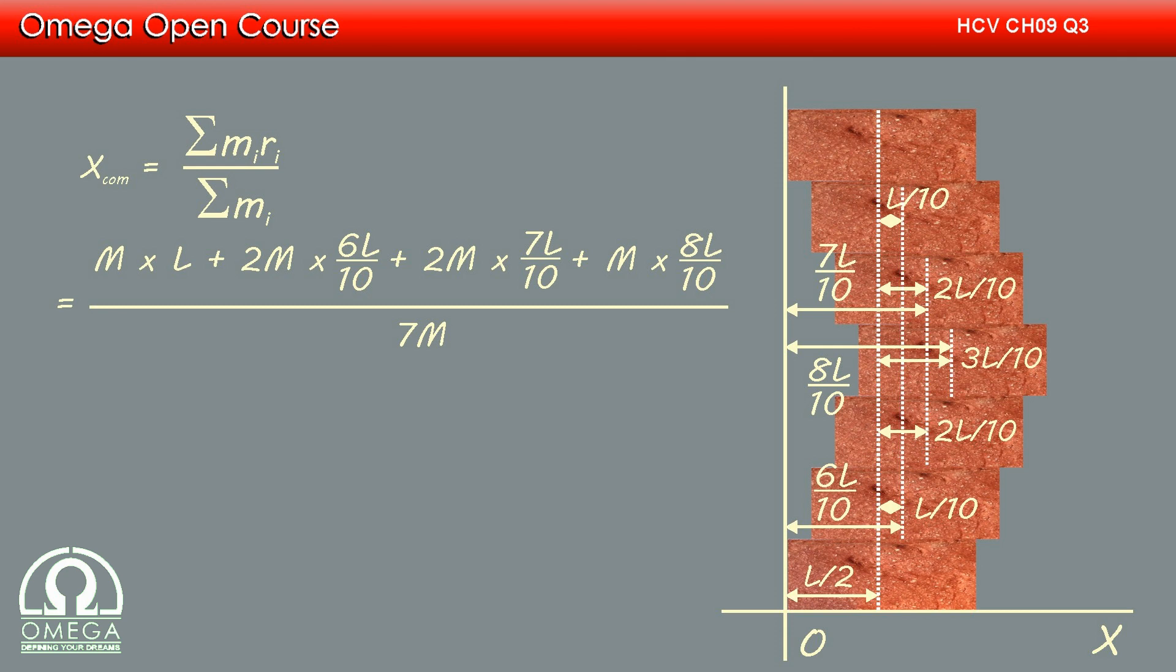Center of mass of two bricks are at a distance of 6L by 10, and of two bricks is a distance of 7L by 10. For one brick, its distance is 8L by 10. Putting these values, we get m into L plus 2m into 6L by 10 plus 2m into 7L by 10 plus m into 8L by 10 divided by 7m.